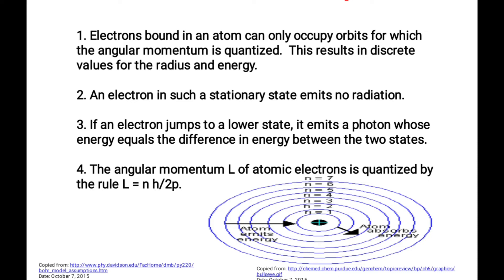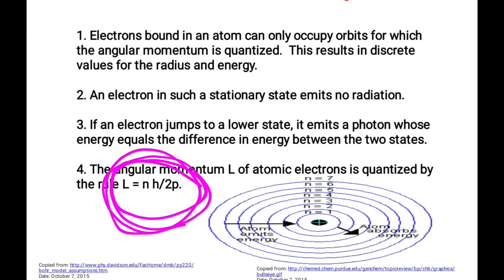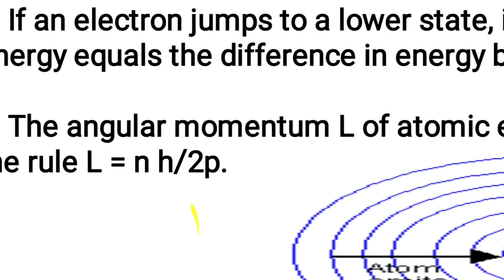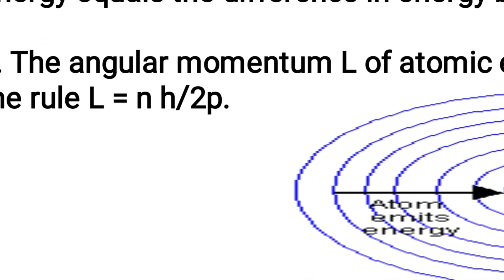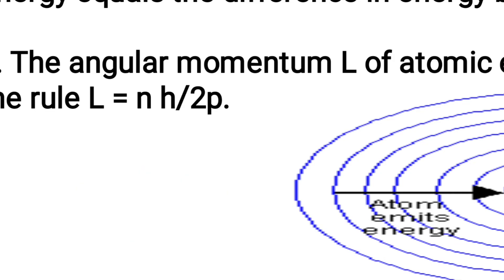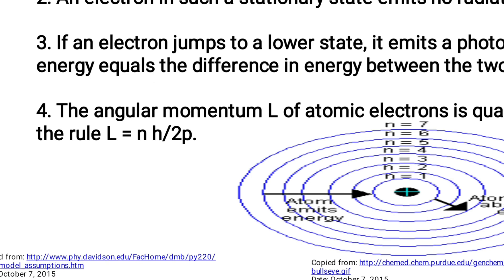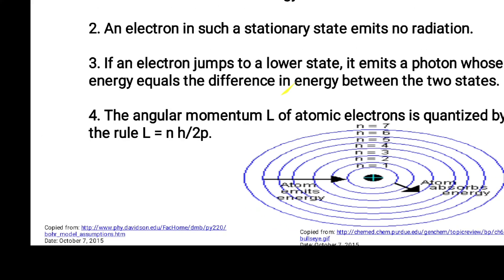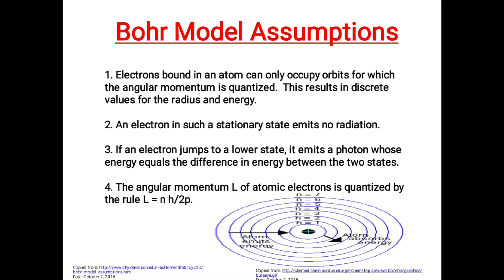The fourth assumption: the angular momentum of an atomic electron is quantized. This often comes in MCQs — angular momentum L is equal to nh divided by 2π. This formula was proposed by Bohr. Remember this formula for MCQs: L = nh/2π.